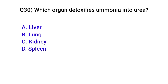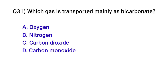Question number thirty: Which organ detoxifies ammonia into urea? Correct option is A: Liver. Question number thirty-one: Which gas is transported mainly as bicarbonate? Correct option is C: Carbon dioxide.